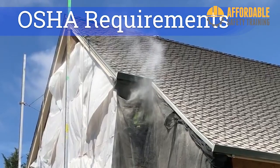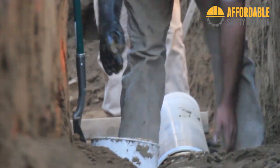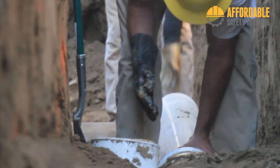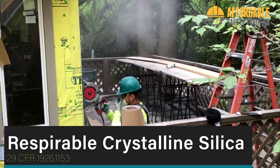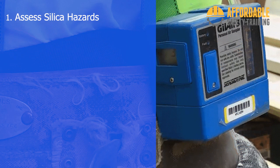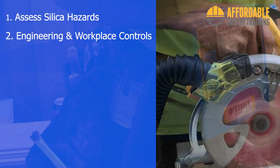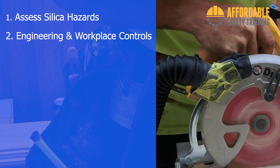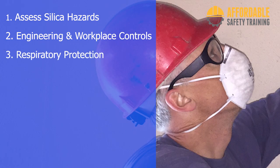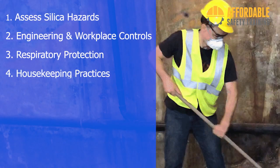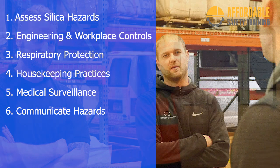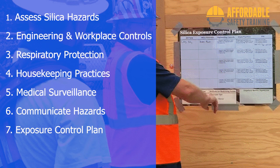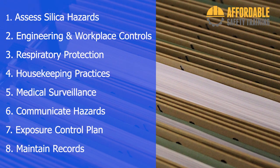The Occupational Safety and Health Administration has implemented regulations to protect workers from the hazards of respirable crystalline silica. 29 CFR 1926.1153 requires employers to: 1. Assess silica hazards in the workplace. 2. Utilize engineering and workplace controls to minimize exposure. 3. Provide respiratory protection as required. 4. Implement silica housekeeping practices. 5. Provide a medical surveillance program. 6. Communicate hazards to employees. 7. Create a written exposure control plan. 8. Maintain silica compliance records.